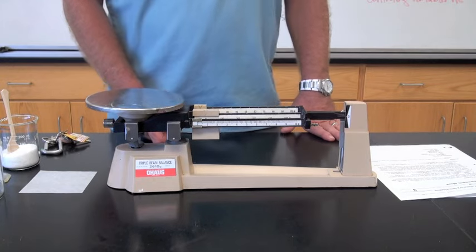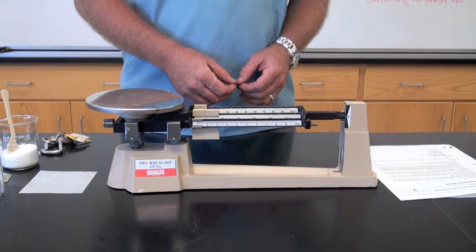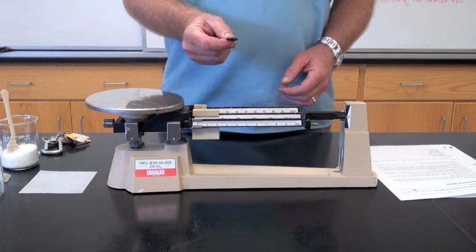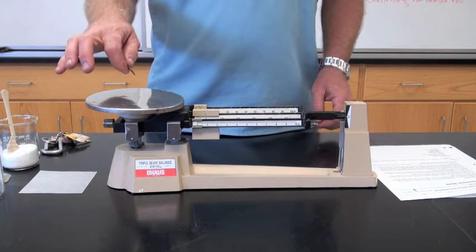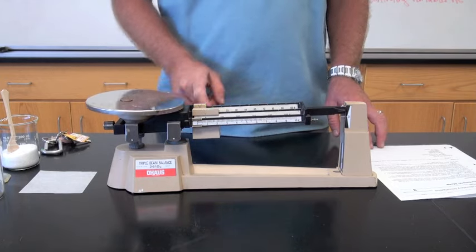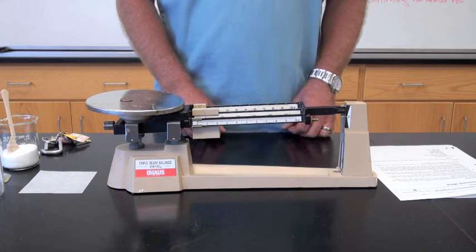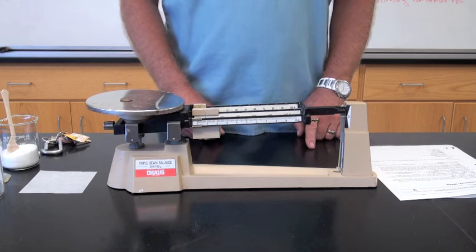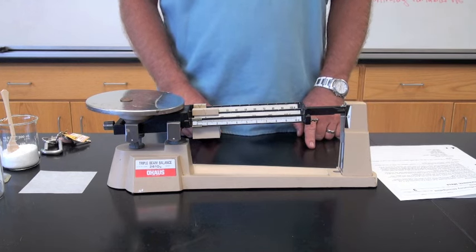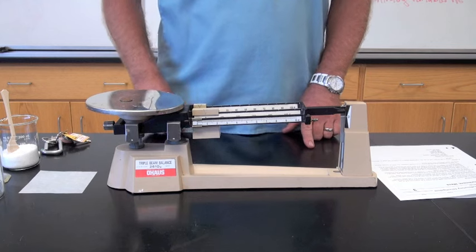The first way to measure an object using a triple beam balance is to measure mass directly. For this, you place your object directly on the pan of the balance, and the riders are moved into position on the beams until the pointer is balanced at the zero point. The mass is determined by the positions of the riders on the beam.